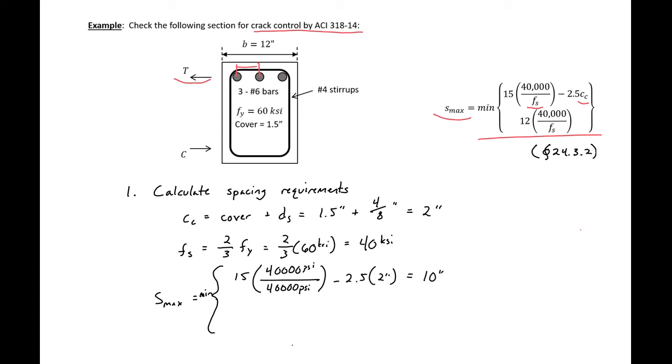Then we have on the bottom 12 times 40,000 divided by 40,000 psi, and this will be equal to 12 inches. So we can see that the minimum of these two values is 10 inches. So this will be our S max moving forward.